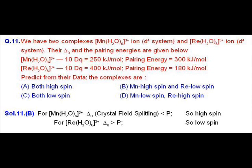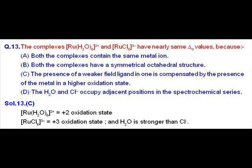In case of manganese complex, you know that the pairing energy is more than crystal field splitting energy. So it should be of high spin. While in the case of rhenium, the crystal field splitting energy is more than that of the pairing energy. So it should be of low spin complex. Question number 13.